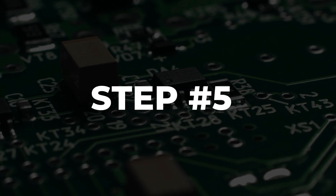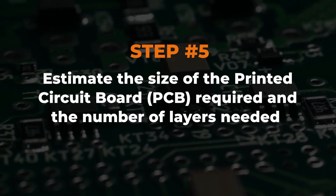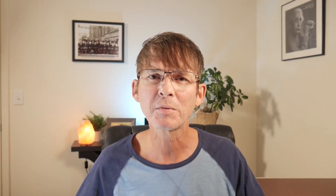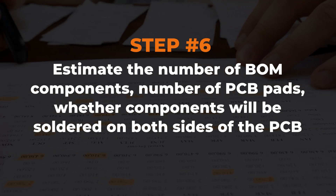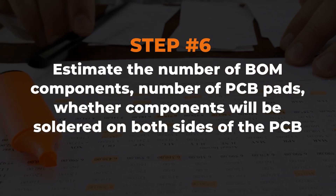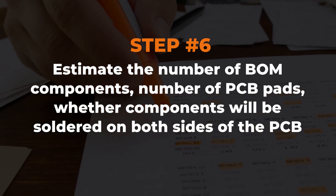Step five is to estimate the size of the printed circuit board required and the number of layers needed. This helps determine the minimum required size for your product as well as the manufacturing cost of the PCB. Step six is to estimate the number of BOM components — bill of materials — the number of PCB pads, and whether components will be soldered on both sides of the PCB. These details will allow you to eventually estimate the cost to manufacture your product.